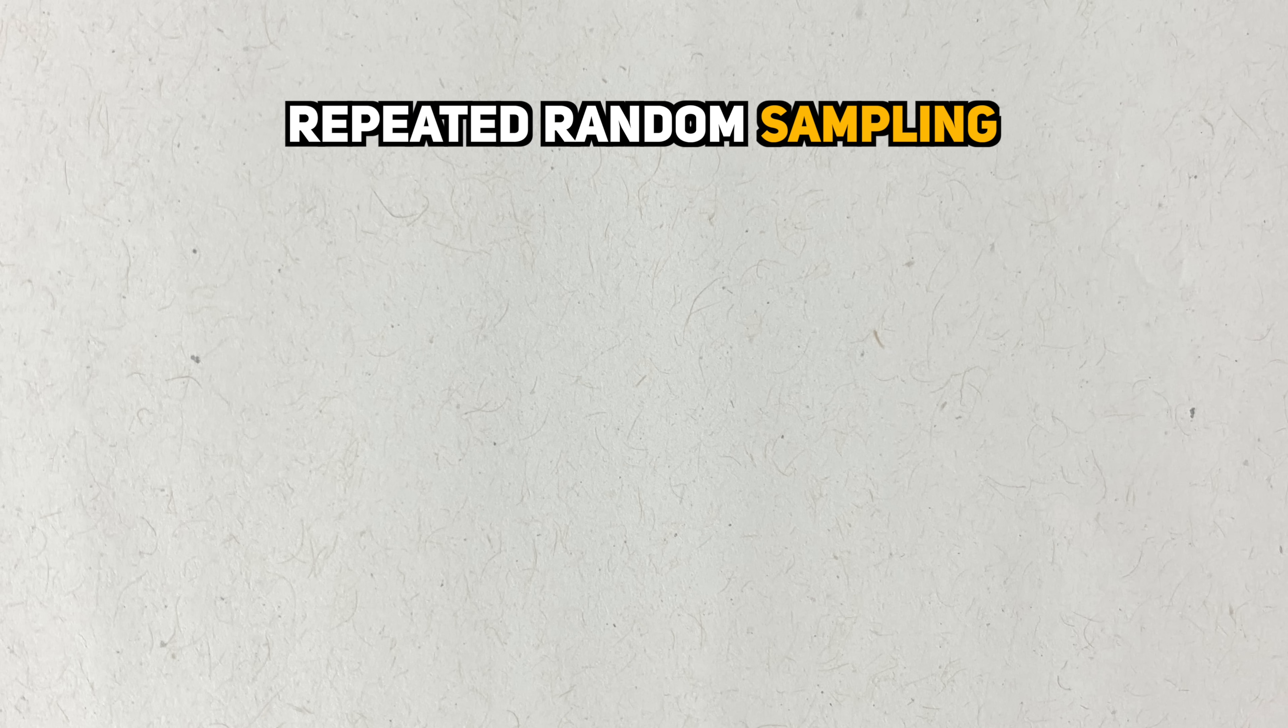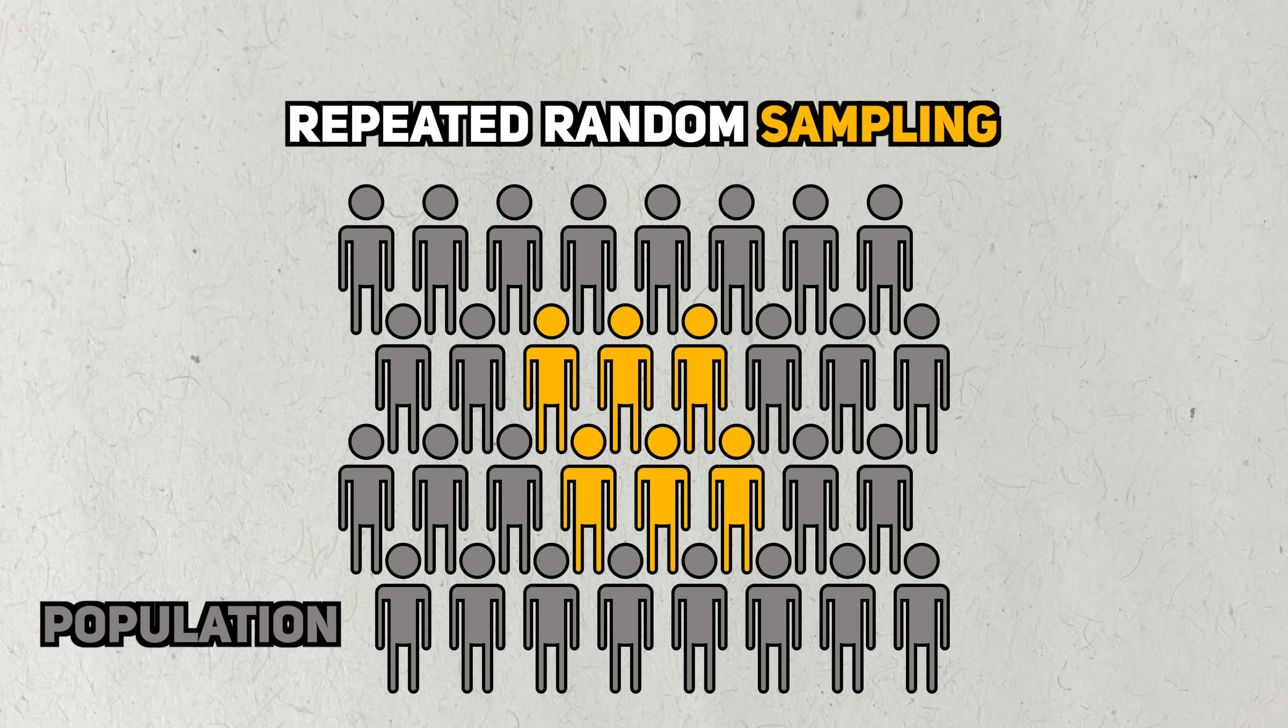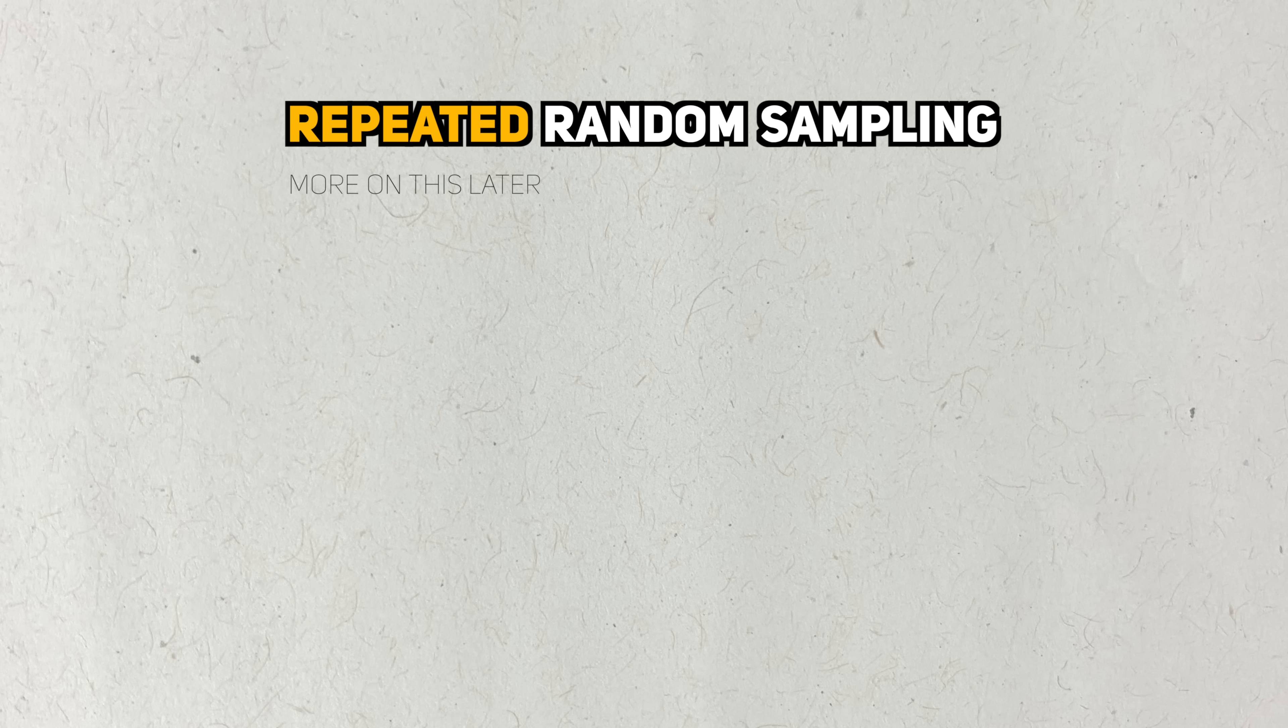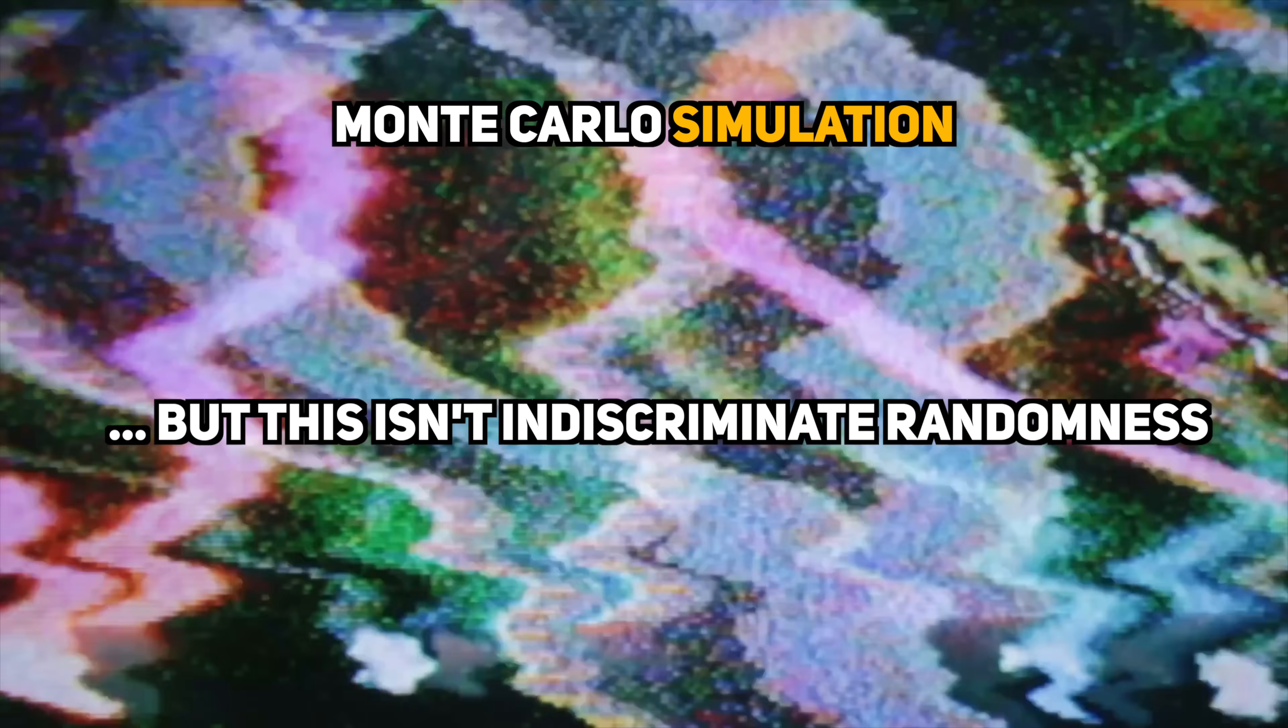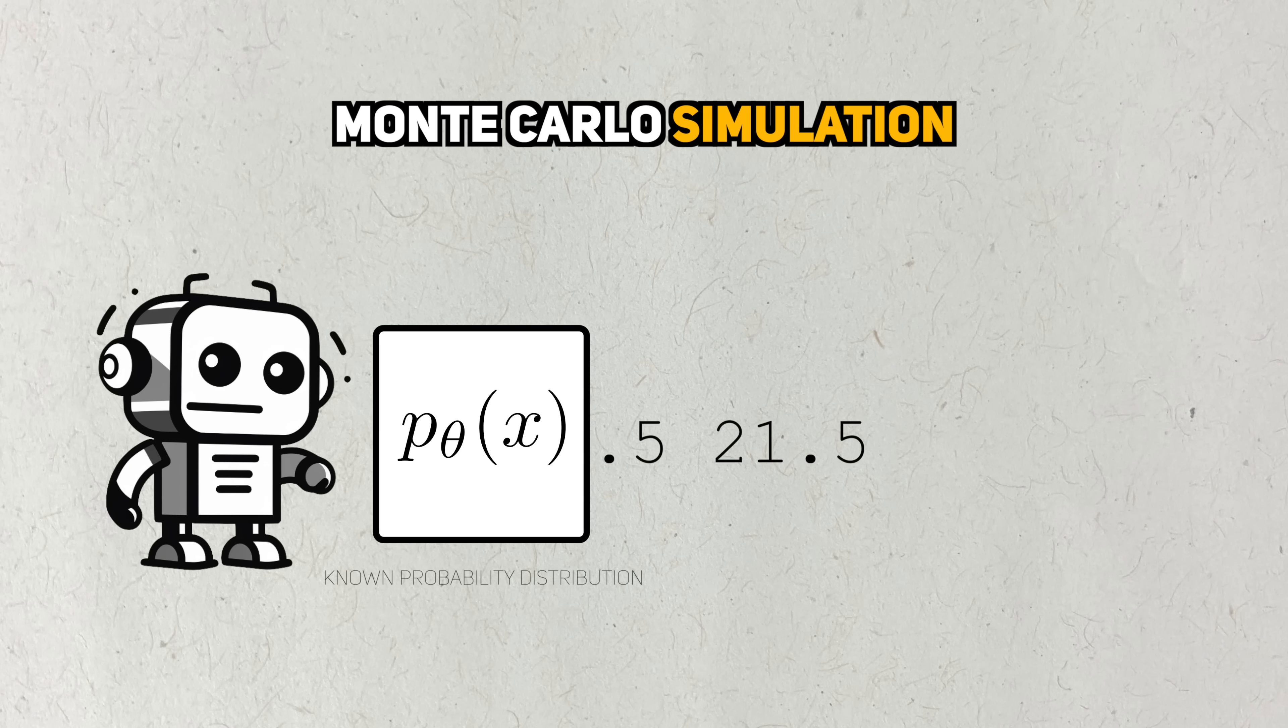The key phrase in the definition is repeated random sampling. Sampling refers to the fact that we only have enough resources to observe a small subset of a large population we want to study. We call the small subset a sample. Random refers to the idea that we want to pick people or items in a way that doesn't prefer or exclude any specific subgroup within this population. We'll get back to the repeated aspect in a bit. Simulation refers to the idea of using a random number generator to create data. These random number generators aren't random in a chaotic way. Their randomness is usually generated from a known probability distribution, like the normal or binomial distribution.